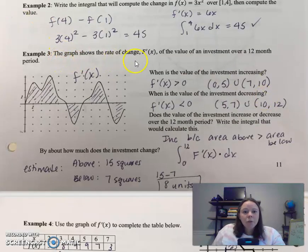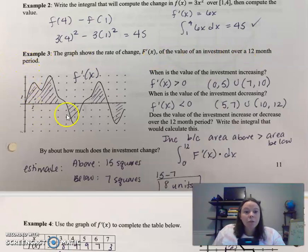So let's look at some more. So the graph shows the rate of change, so we're looking at the derivative, of the value of an investment over a 12-month period. So notice I labeled it very clearly. We're looking at the derivative graph. That's really important.